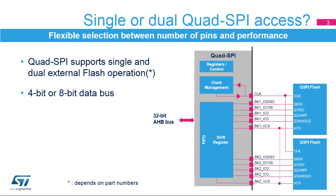The Quad SPI Memory Interface, integrated inside STM32F7 microcontrollers, provides a communication interface allowing the microcontroller to communicate with external SPI and Quad SPI memories. The Quad SPI Memory Interface supports the connection of one or two external memories, meaning that data can be transferred over a 4- or 8-bit data bus between the memory and the microcontroller.